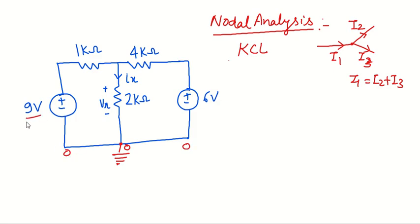Now we can see this is a 9 volt supply here. This terminal is already at ground terminal, so this will be having 9 volts at this node and it will be having plus 6 volts at this node.